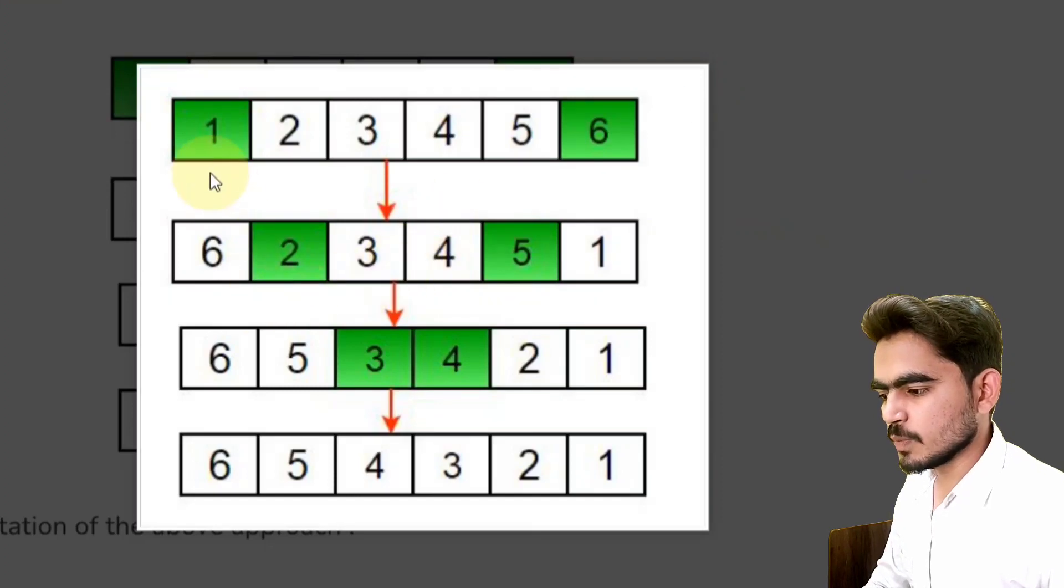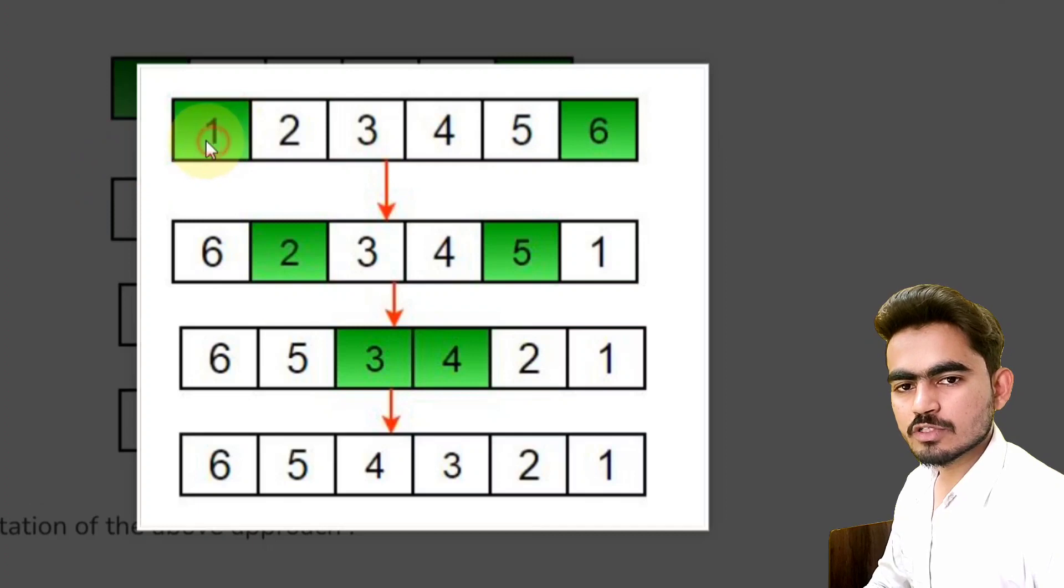In first iteration of the for loop, we will swap the elements which are present at first index and last index. In second iteration, we will swap the elements which are present at second index from the starting and second index from the ending. Like this, we will swap the elements until we will get our resultant array.